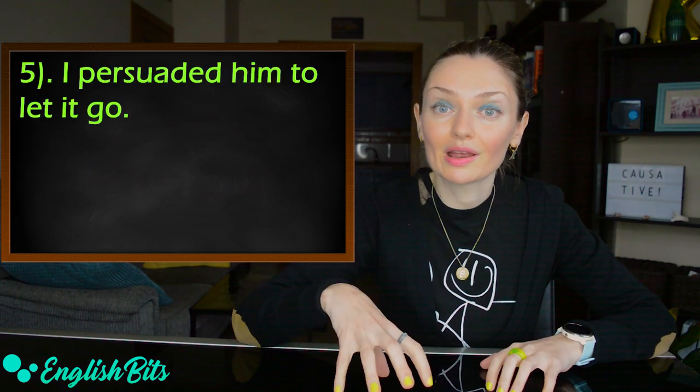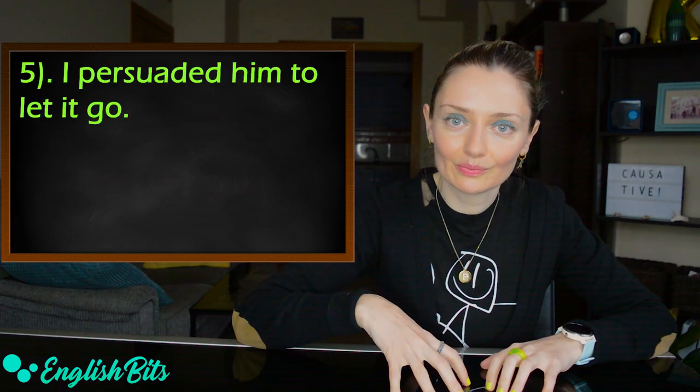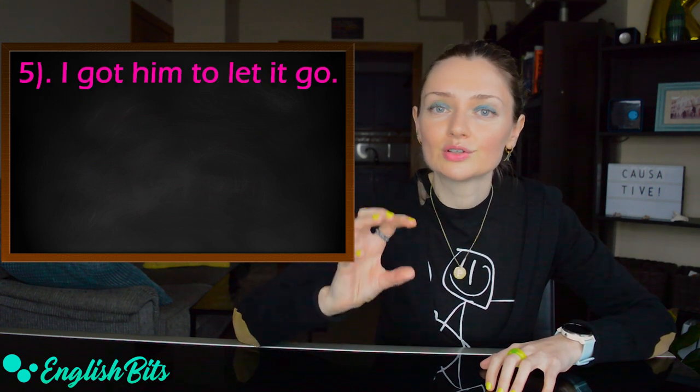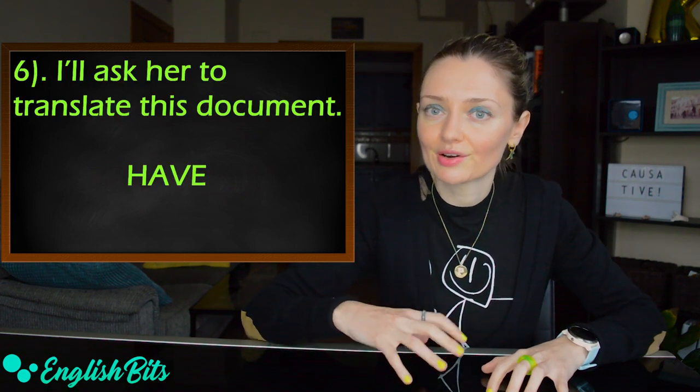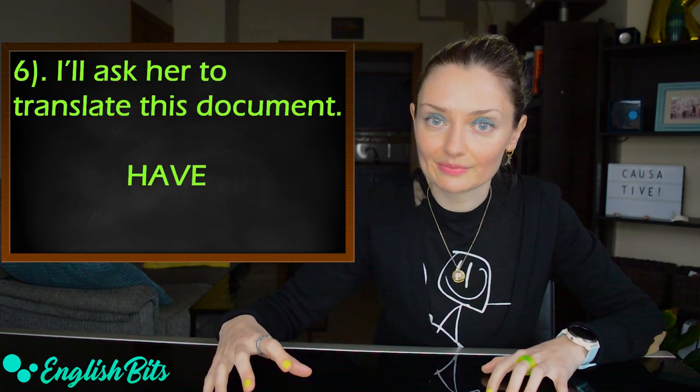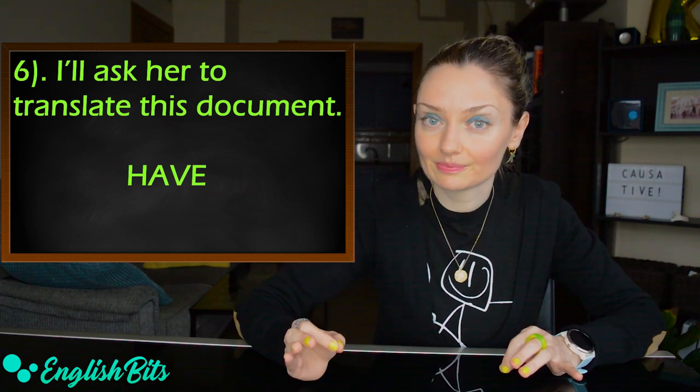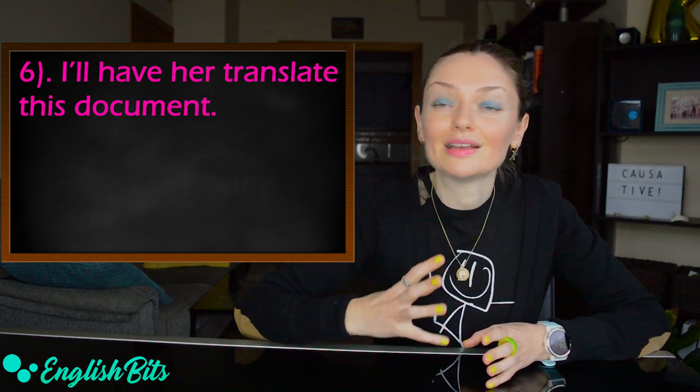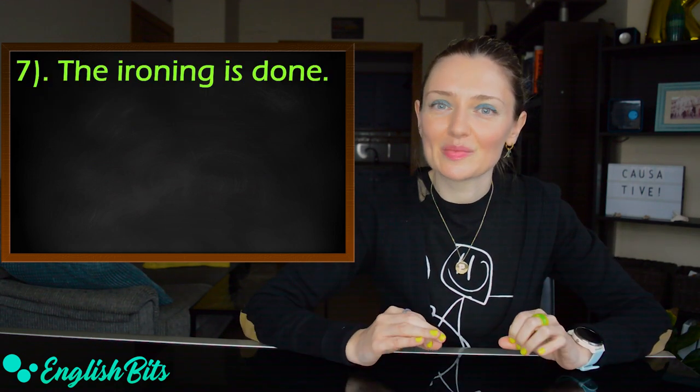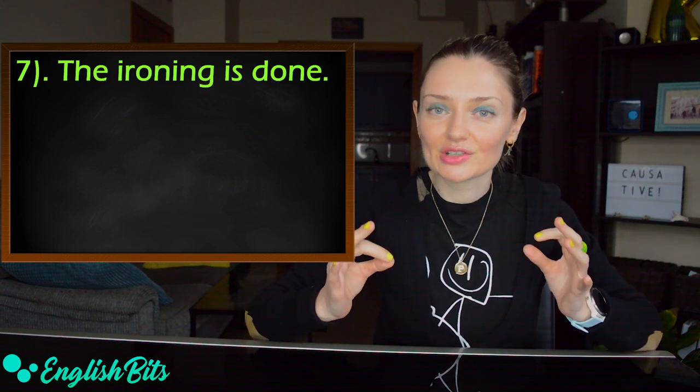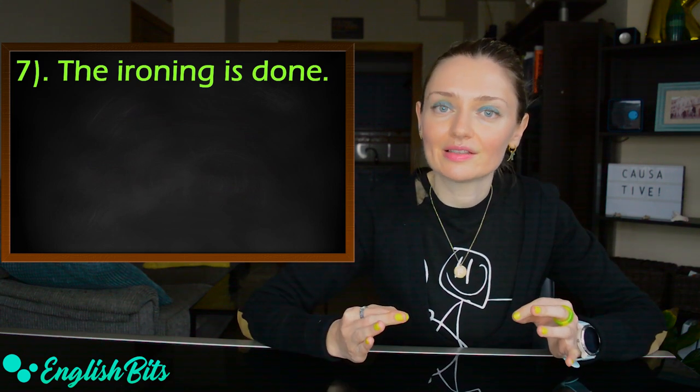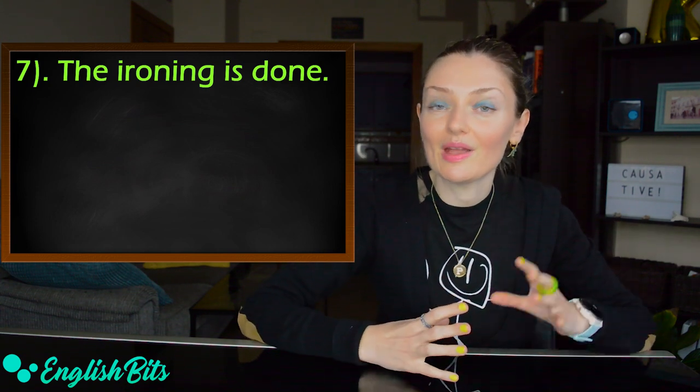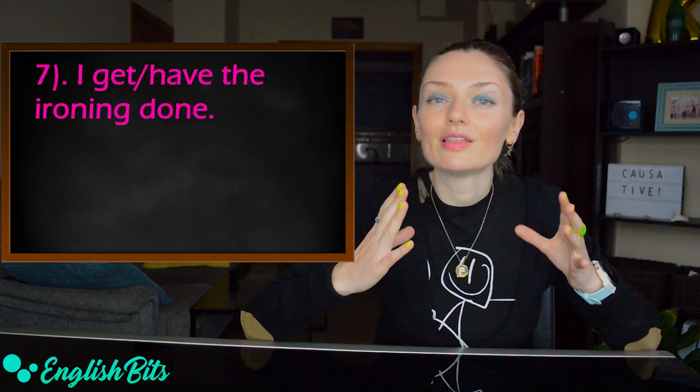Number five: I persuaded him to let it go. A similar sentence would be: I got him to let it go. Number six: I'll ask her to translate this document. I want you to use the verb to have. And a similar sentence would be: I'll have her translate this document. Number seven: The ironing is done. Transform this sentence and the subject you have to use is I. And the correct sentence would be: I got or I have the ironing done.